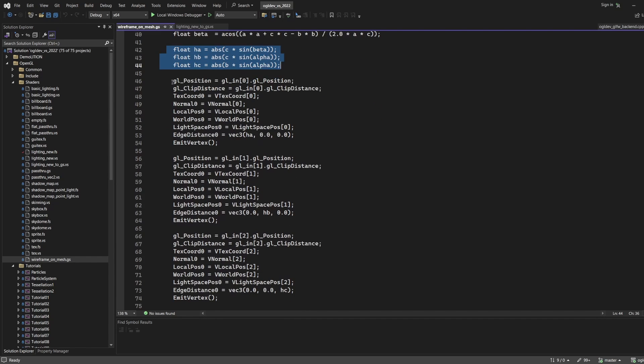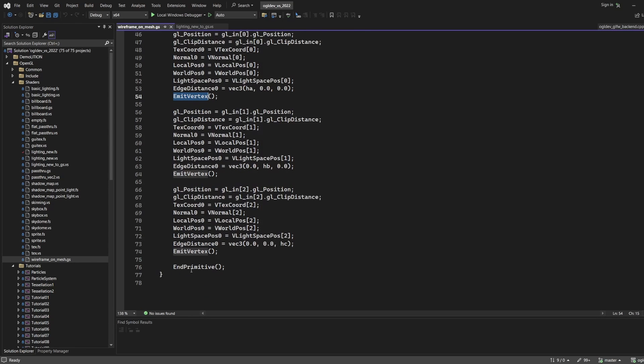We are almost done with the GS. We just need to copy the input attributes to the output and set the edge distance attribute. Each vertex is actually part of two edges, so the distance to both of them is zero. We use the distance values which we calculated to set the first, second, and third component of edge distance. Remember to call emit vertex after each vertex as well as end primitive at the end.